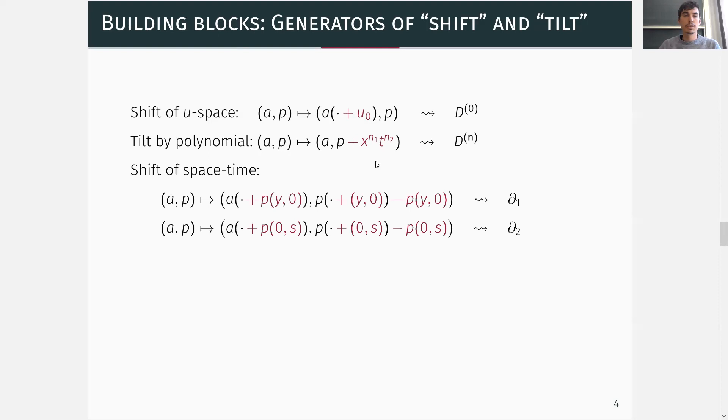Last, we have to consider a shift of spacetime, by which I mean we want to shift the polynomial by a spacetime vector. However, when we shift the polynomial, it does no longer vanish at the origin, hence we have to correct this by subtracting the correct value. To not lose any information, we make up for this by shifting the non-linearity by the same value. This gives rise to the infinitesimal generators ∂_1 and ∂_2.